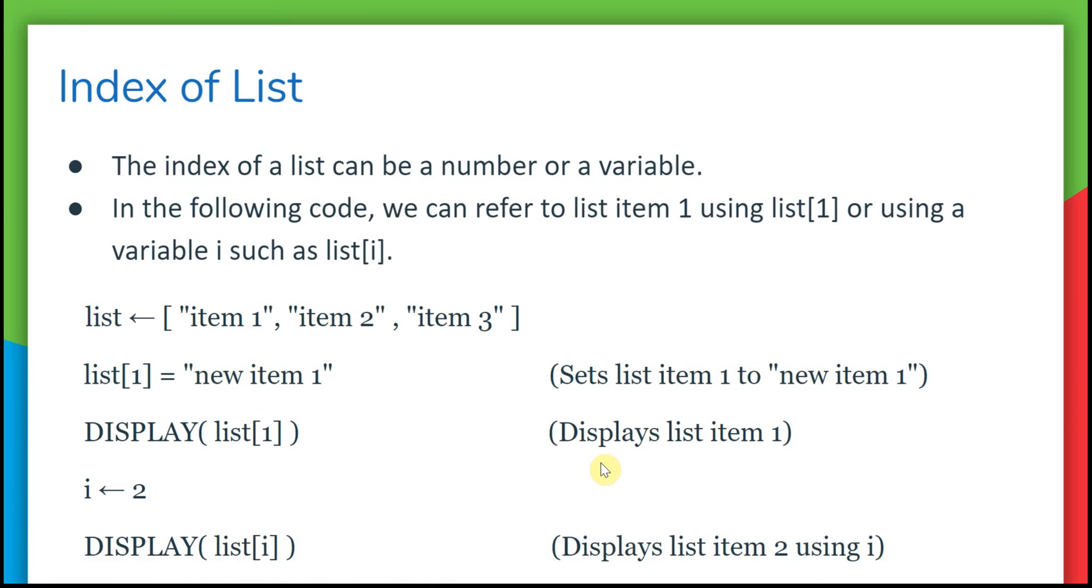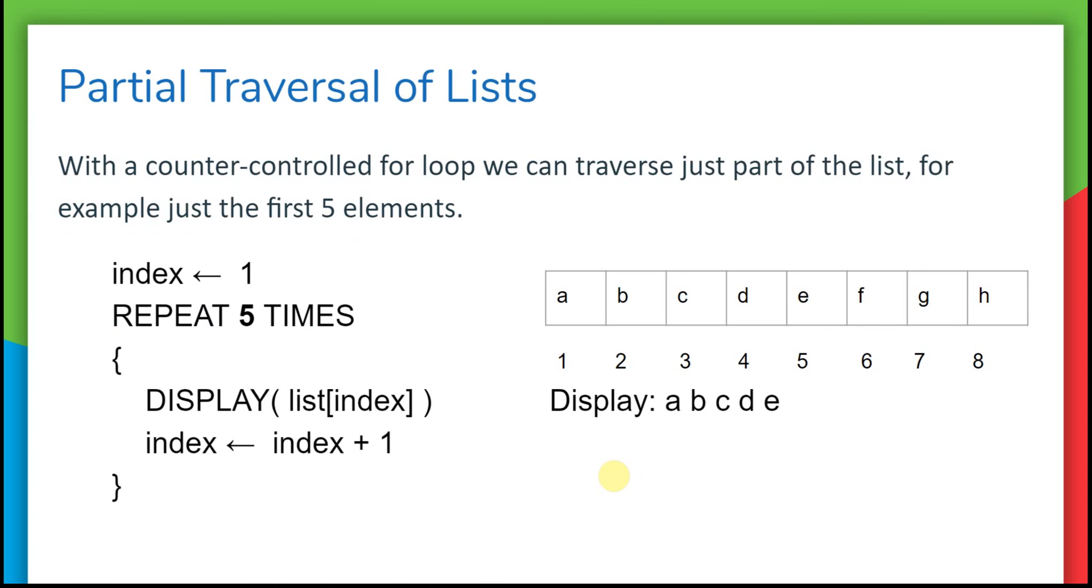You can also do a partial traversal of a list. If you have a longer list - here we have a list of eight items - if I just want to visit the first five items, I could change this loop to just repeat five times instead of the length of the list and just visit the first five.